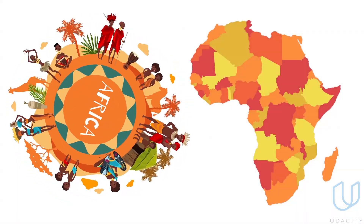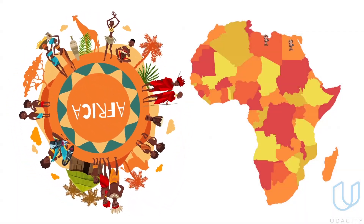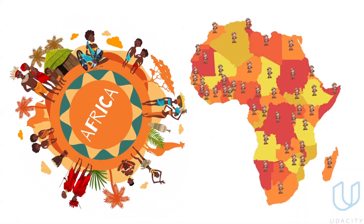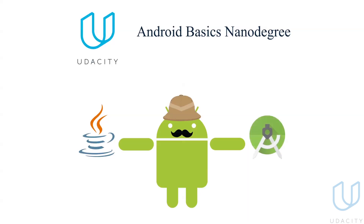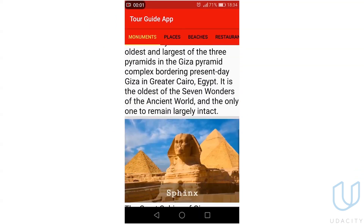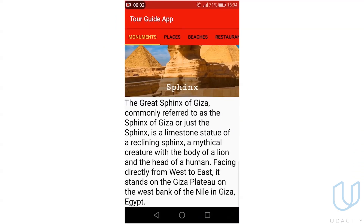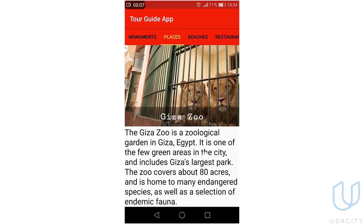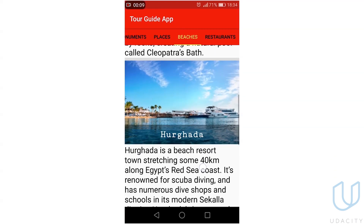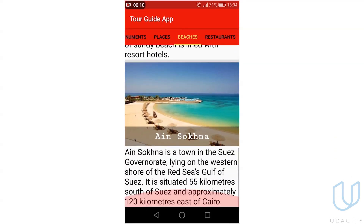We all love our homeland and we have this little tour guide inside every one of us. The Android Basics Nanodegree from Udacity gives you the ability to develop an application to guide a user around a city or location of your choice. As a multi-screen app, you will be able to share your knowledge about a city you are very familiar with.